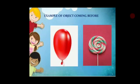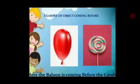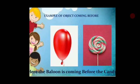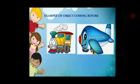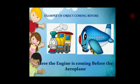Can you see a balloon and a candy? Here the balloon is coming before the candy. Now let's see another example with an engine and aeroplane. Here the engine is coming before the aeroplane.